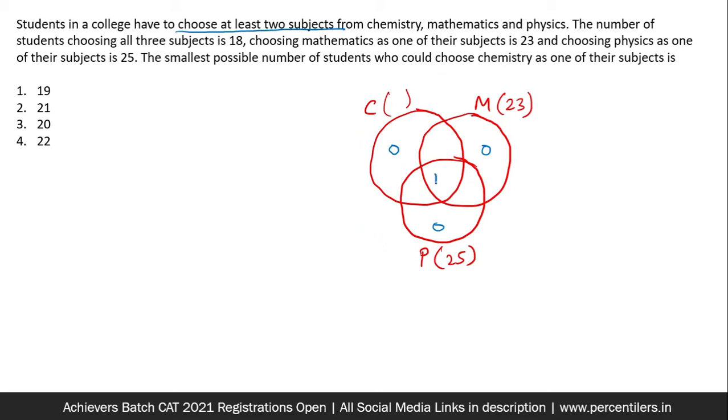Okay, next 18 students opted for all three subjects. So we have noted this. Now the question is smallest possible number of students who could choose chemistry as one of their subjects, this number, the bracket which is left empty as of now.